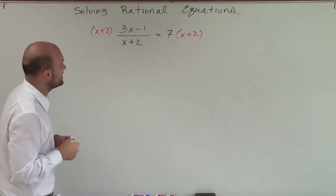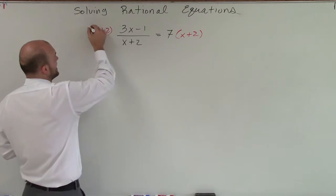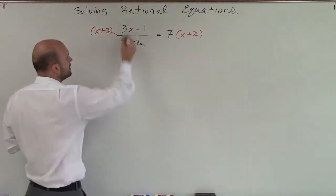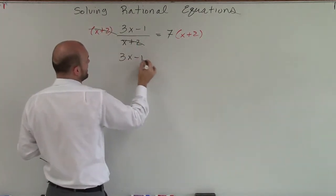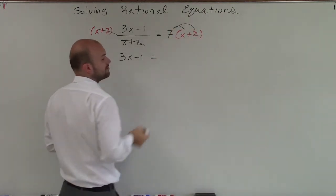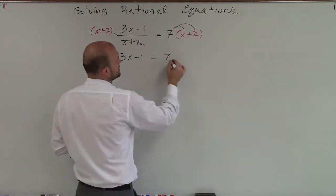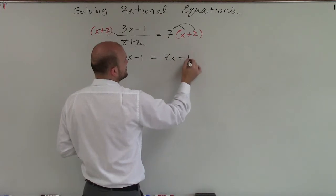So now you can see that this x plus 2, these are going to now divide into 1, which is just going to leave me with a 3x minus 1 on the left side. And then over here, I need to make sure I apply my distributive property, which is going to leave me with a 7x plus 14.